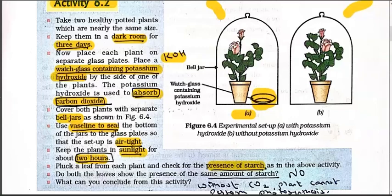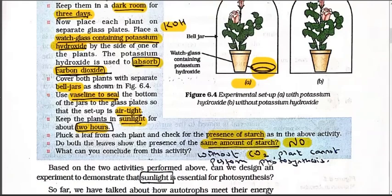Do both leaves show the presence of the same amount of starch? No - in setup A we will not see starch or it will be very less, while in B starch will be visible. What can we conclude from this activity? Without carbon dioxide, a plant cannot perform photosynthesis. In the first activity we saw chlorophyll is essential; in Activity 6.2 we saw that without carbon dioxide also, photosynthesis cannot occur. So both carbon dioxide and chlorophyll are essential.